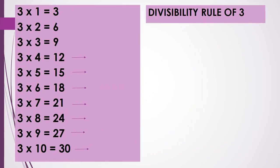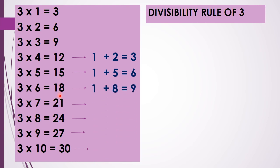The next is the divisibility rule of 3. In the table of 3, the products are 3, 6, 9, 12, 15, 18, 21, 24, 27, 30 and so on. When we add the digits of the two-digit products — 1+2 is 3, 1+5 is 6, 1+8 is 9, 2+1 is 3, 2+4 is 6, 2+7 is 9, 3+0 is 3 — we again get 3, 6, or 9.